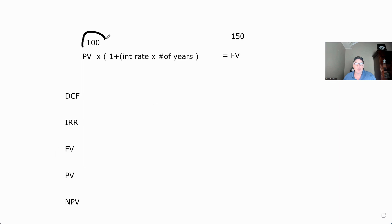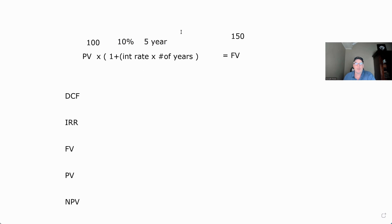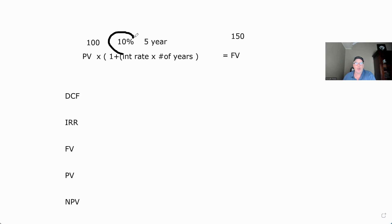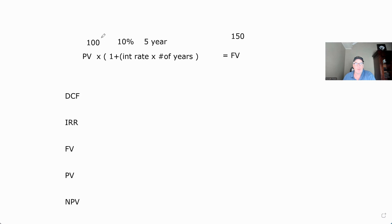Future value is what an investment now — say we invest $100 now at a rate of 10% for five years — that's going to be worth $150. That's our future value. The internal rate of return is the rate of return where present value becomes future value, and you have a zero NPV, which we'll get to.